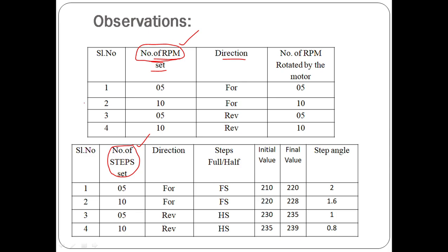In the tabular column, if you've set RPM mode and set the RPM to five in the forward direction, then after pressing start it has to rotate exactly five rotations per minute. You'll be given a clock and you have to check how many rotations occur per minute. When set to five RPM forward, the stepper motor should rotate at exactly 5 RPM — that is the observation you need to make practically.